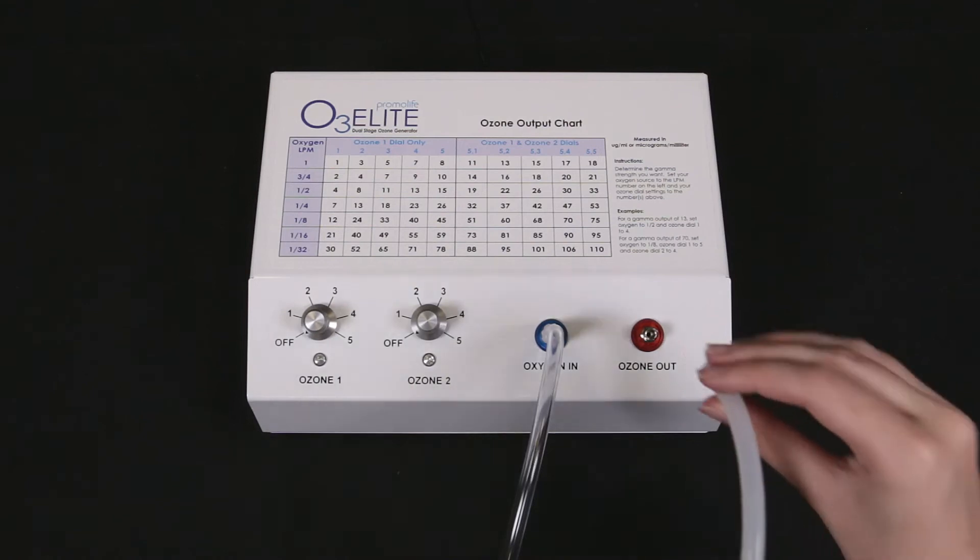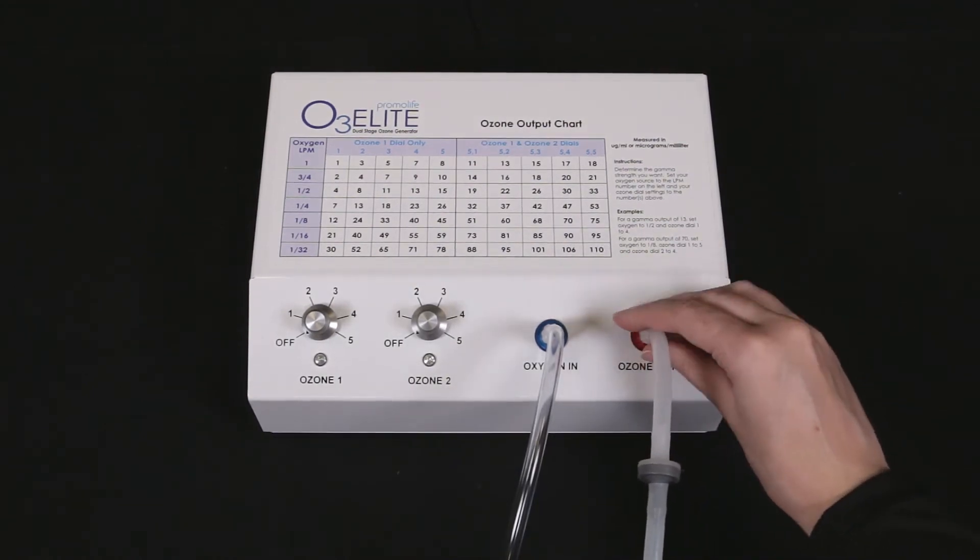First, you will need to attach the tubing with the check valve and attach tubing to the ozone outport of your ozone generator.